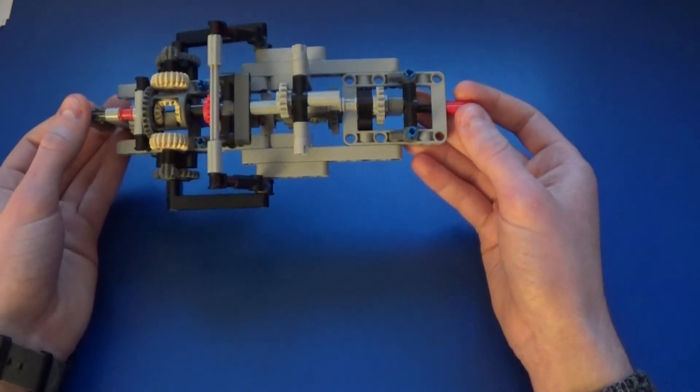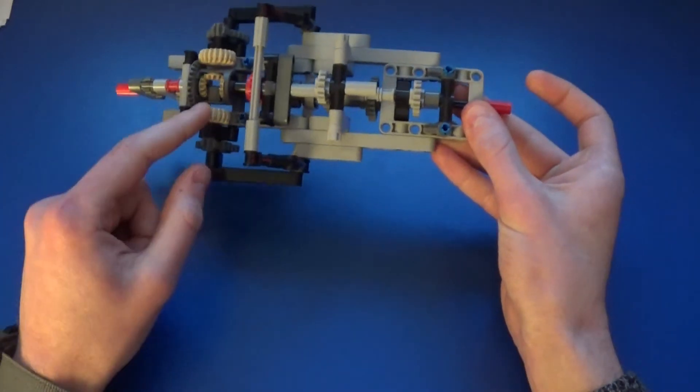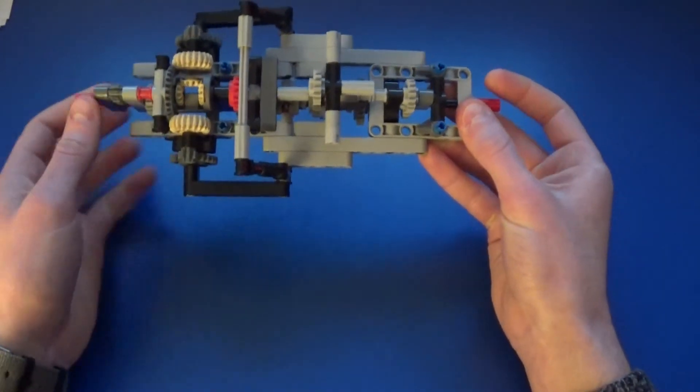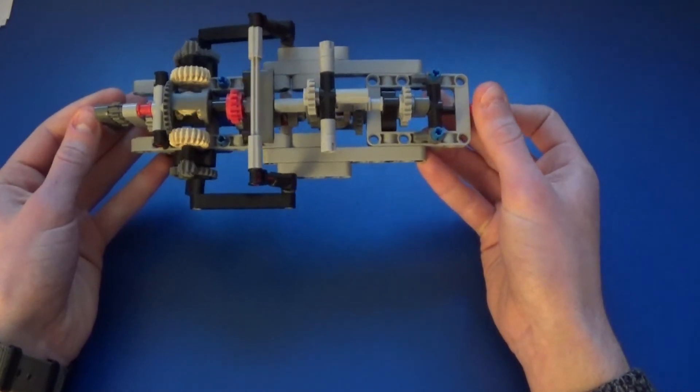So this one's spinning, and now what you can see is, instead of transferring it straight through and not affecting this outer gear, now the outer gear is being spun as well.